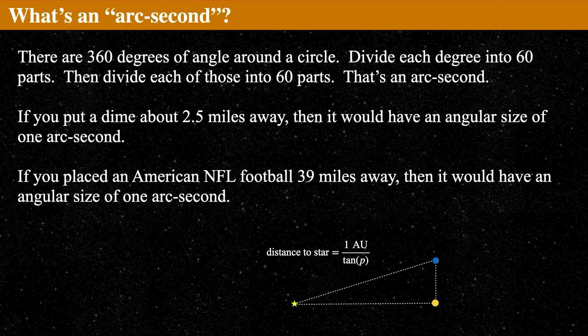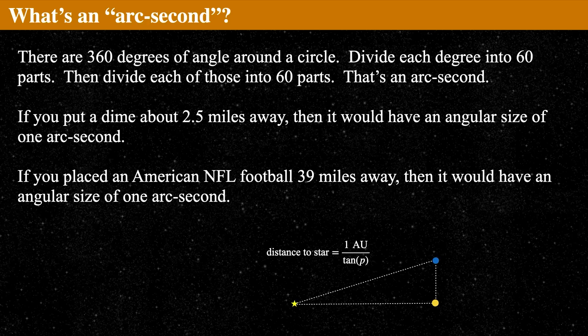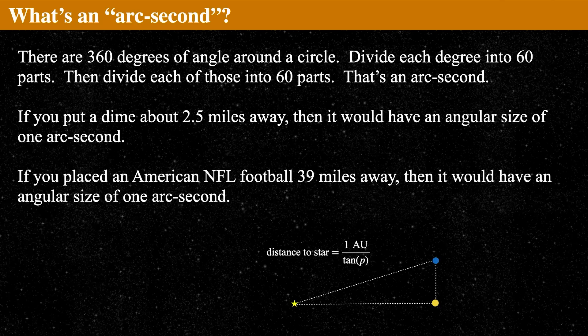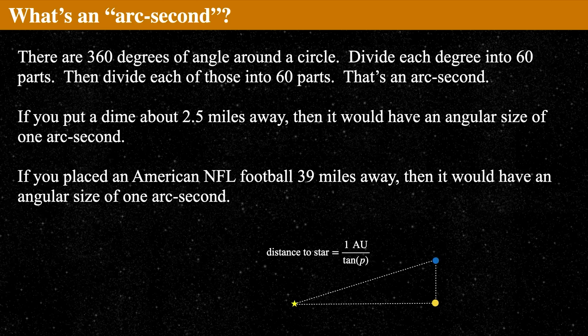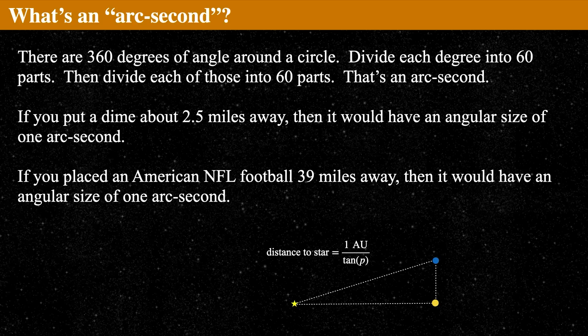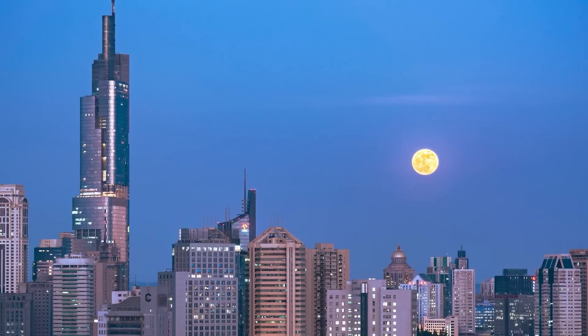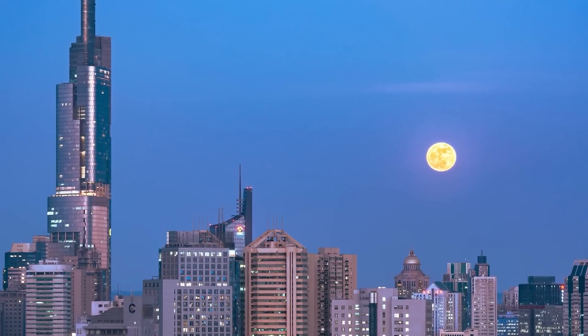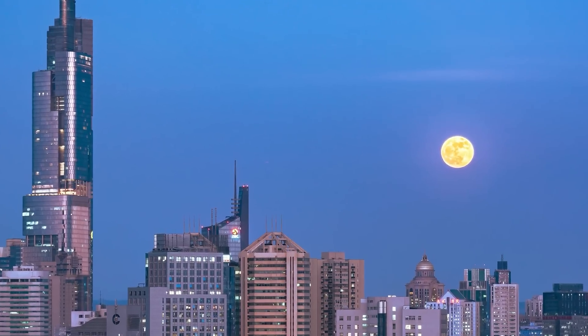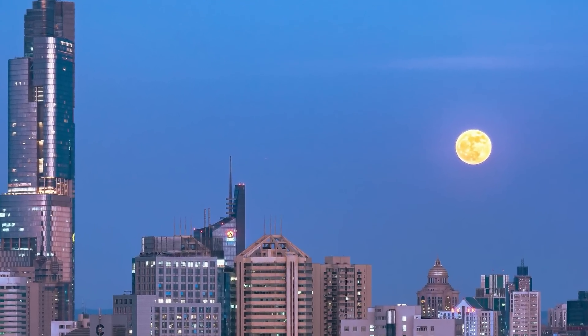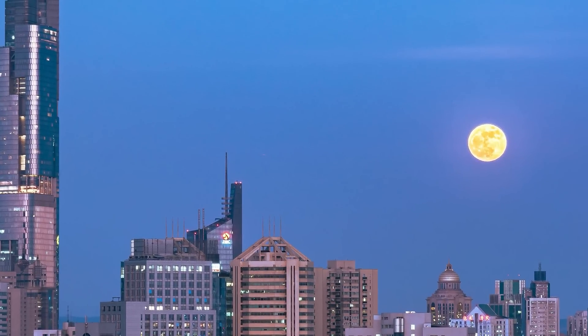How big is something that is one arc second? Take a dime and place it about two and a half miles away. That's the size of one arc second. Or take an NFL football and place it 39 miles away. That's about one arc second. An arc second is a really small angular measurement. When you look at the moon, the standard size of things you can see without a telescope are about five to ten arc minutes.